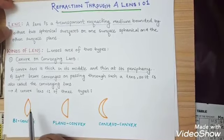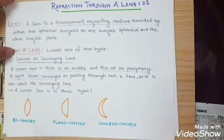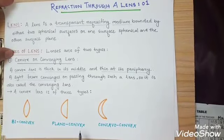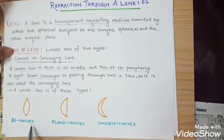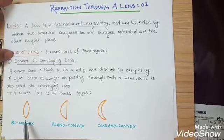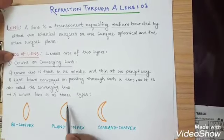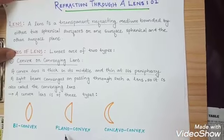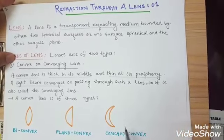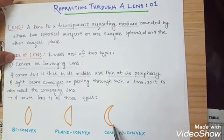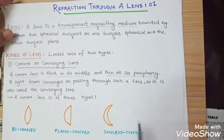So it is called converging lens. Convex lens is of three types: one is biconvex, planoconvex, and concavoconvex. If both sides are convex, that is biconvex. If one side is plane and another is convex, that is planoconvex. And if one side is concave and another side is convex, that is concavoconvex.